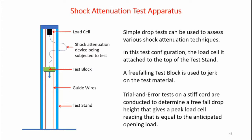Here's my shock attenuation test apparatus. It's the same rig I used for my parachute opening load tests, but in this case the load cell is physically attached to the rig itself. The shock attenuation system is attached between the load cell and the test block, and I can set the weight of the test block and the drop height in order to give me the necessary snatch load to test the material. By trial and error, I determine the free fall drop of the test block in order to mimic the opening load calculated by the earlier equations.